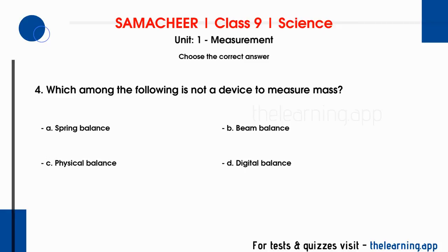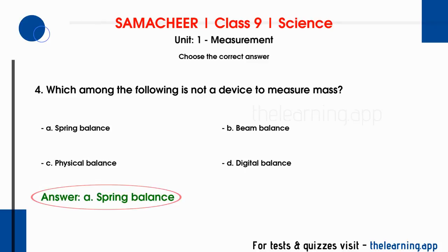Fourth question: which among the following is not a device to measure mass? Options are A) spring balance, B) beam balance, C) physical balance, D) digital balance. The correct answer is option A: spring balance. The other three — beam balance, physical balance, and digital balance — are used to measure mass.